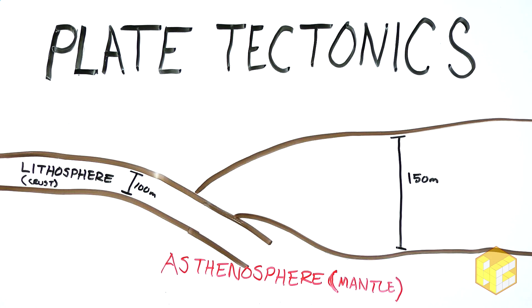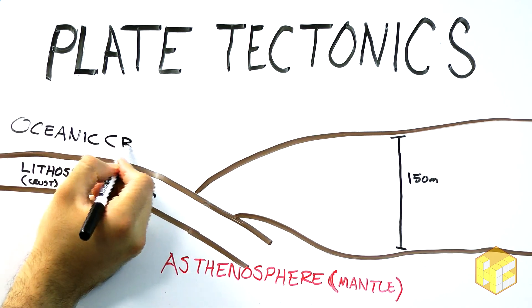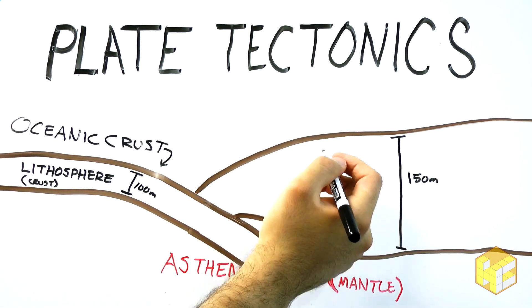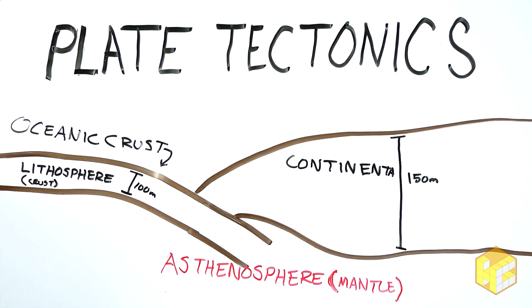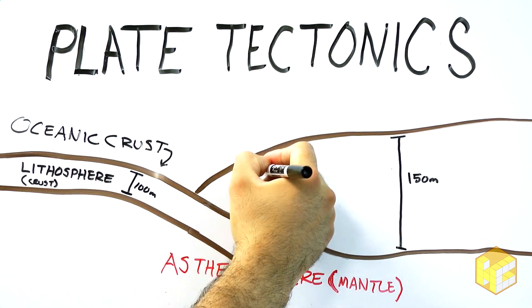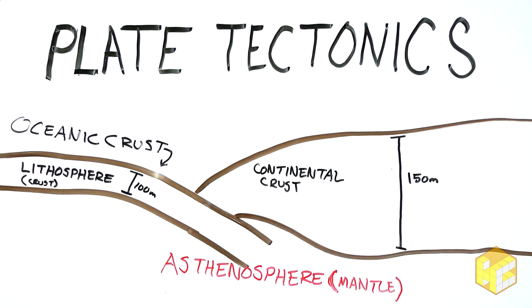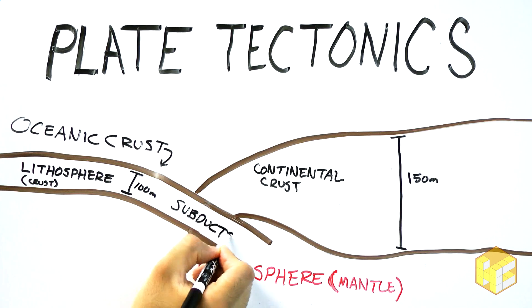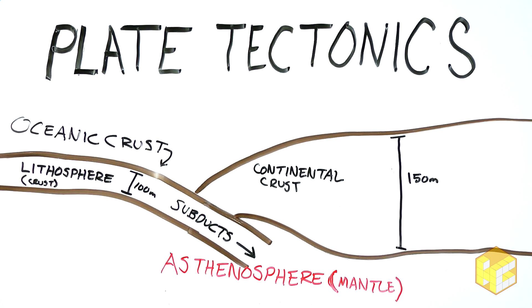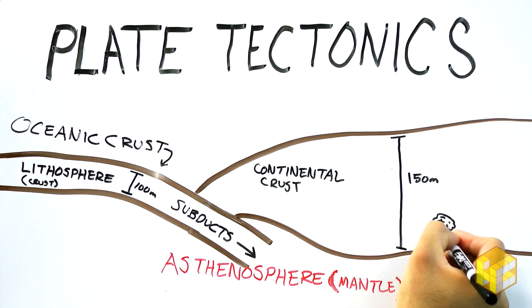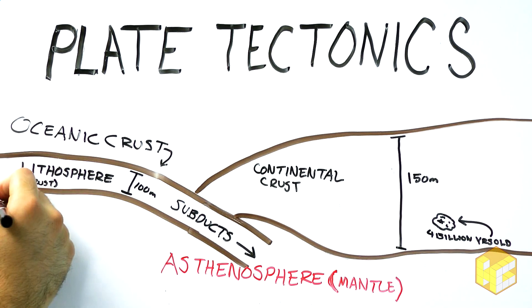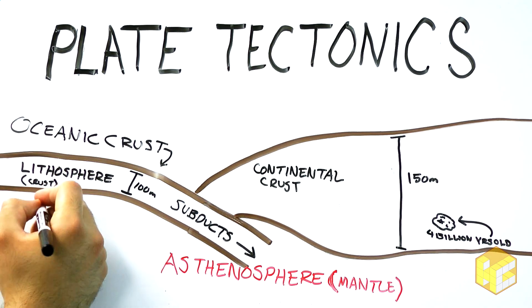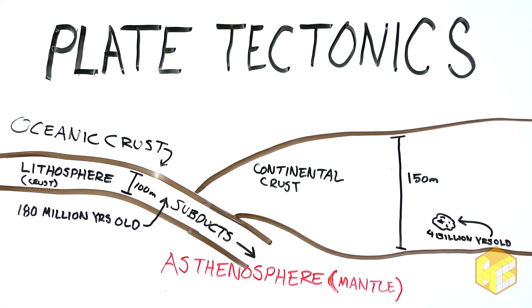There are two main types of crust, continental and oceanic. Continental crust is thicker but much less dense, whereas oceanic crust is thinner and denser. This is important because the plates aren't static. They collide with each other, and the oceanic crust will always abduct beneath the continental plates. This means that there are bits of the continental crust as old as 4 billion years old, but the oldest oceanic crust is a mere 180 million years old.